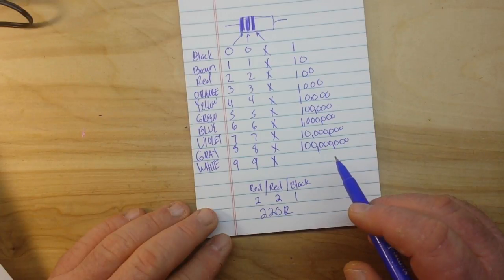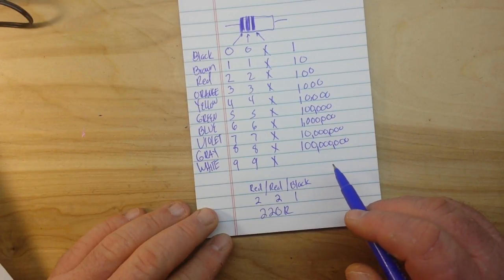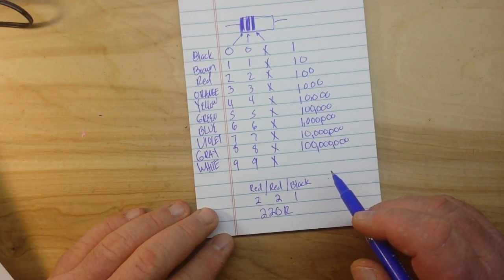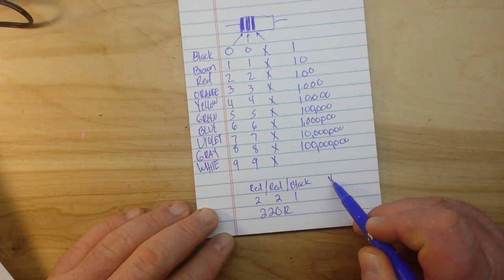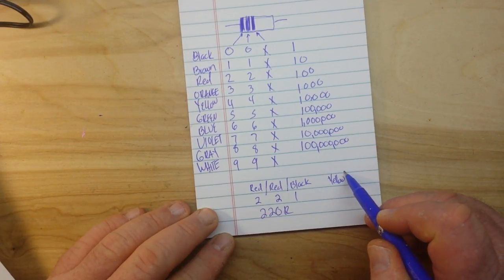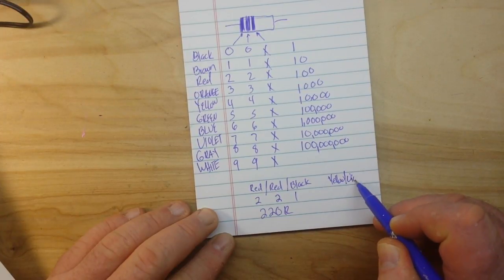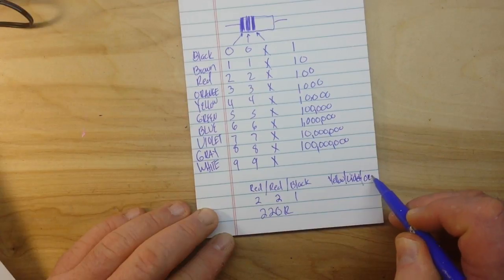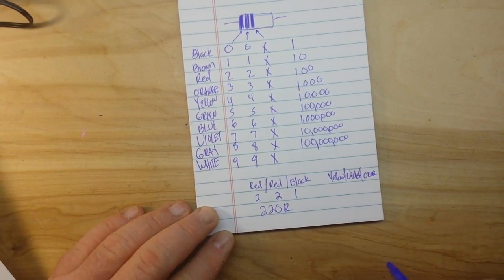All right, what if it is... now I'm just making these up, these might not fit into our resistor color codes... orange, yellow, violet. Take a second and figure that out.